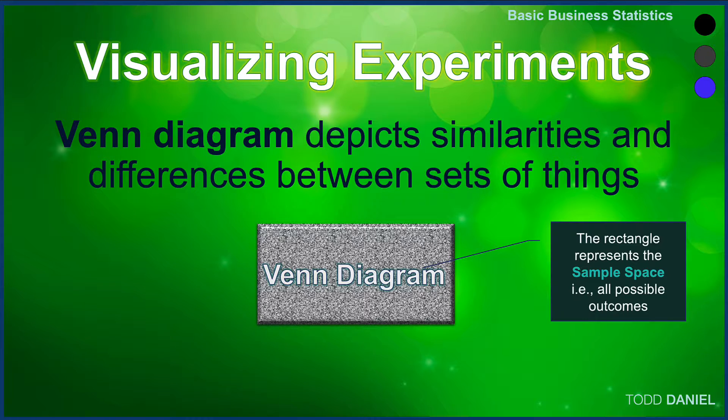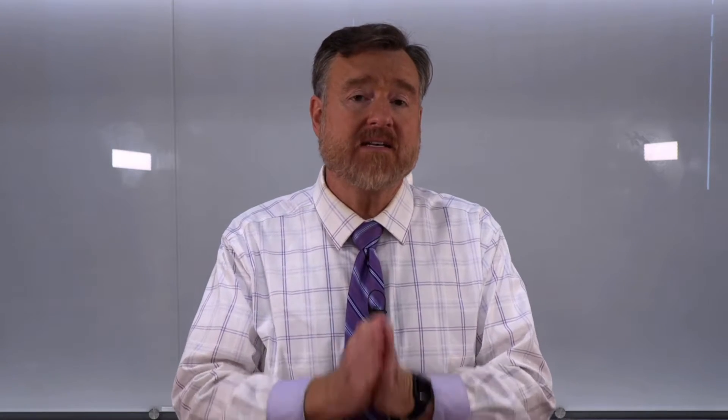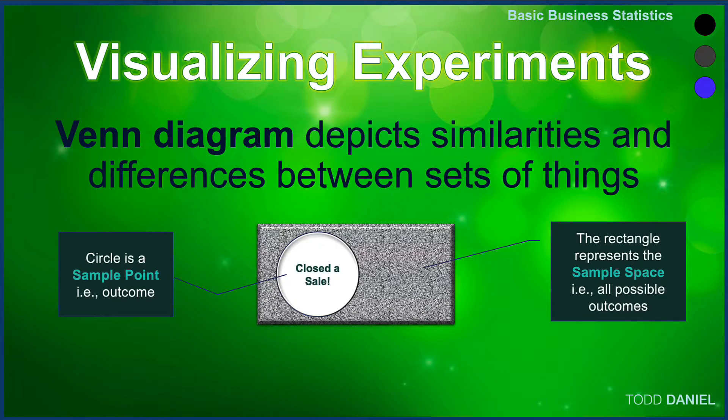In addition to the rectangle, your Venn diagram will also contain at least one circle. The circle is a sample point or an outcome. In the case of making a sales call, the hoped-for outcome is that you made the sale. The relative size of the circle could indicate a smaller or greater probability of this event occurring within your sample space.